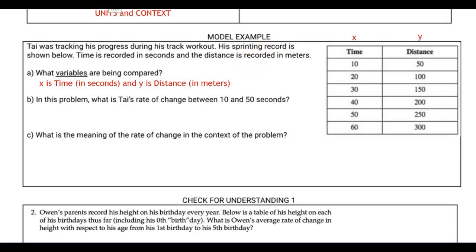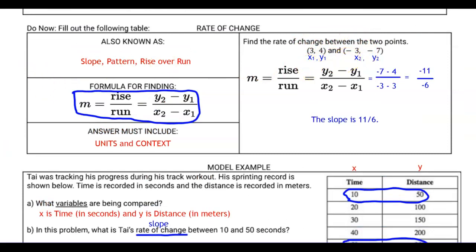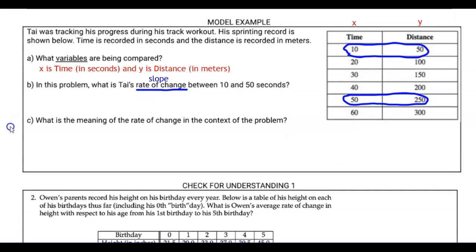Another way that I could figure that out is that time is given to me in the first column here and distance is in the second column, which usually means time. The first column is going to be X and distance. The second column is going to be Y. The next question asks, in this problem, what is Ty's rate of change between 10 and 50 seconds? So rate of change, we know that is the slope. And at 10 seconds, his distance is 50. And at 50 seconds, his distance is 250. So as the time changed from 10 to 50, the distance changed from 50 to 250, which means we're going to have to turn these rows in the table into ordered pairs.